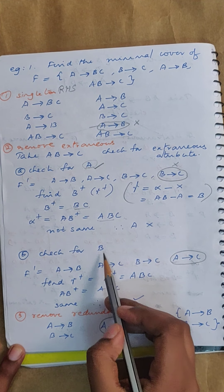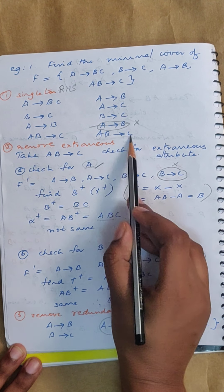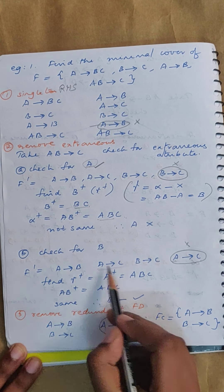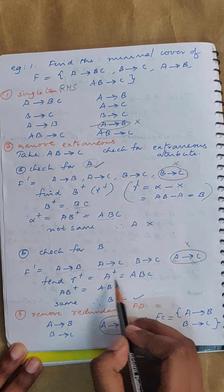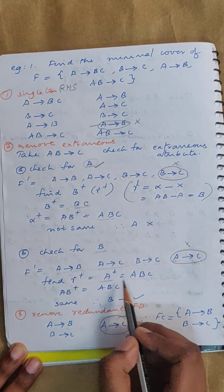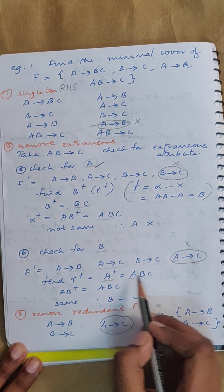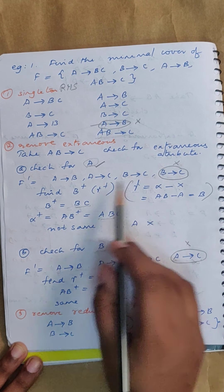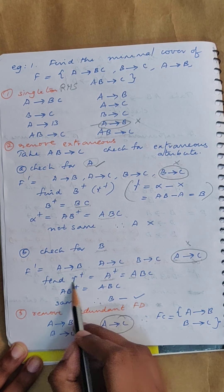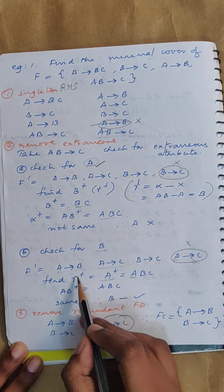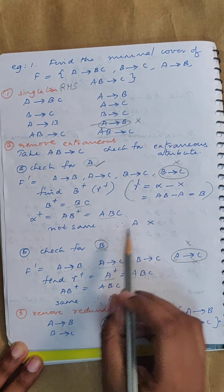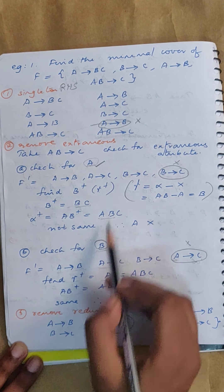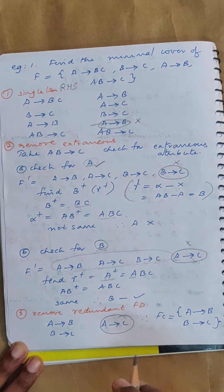Now check if B is extraneous. Remove B from AB→C to get A→C. Since A→C is already present, it need not be written twice. Gamma is A. Find A closure in F dash: from A→B you get AB, then from B→C you get ABC — so A closure is {A,B,C}. AB closure is also {A,B,C}. They are the same, so B is extraneous. The functional dependencies now become A→B, B→C, and A→C.